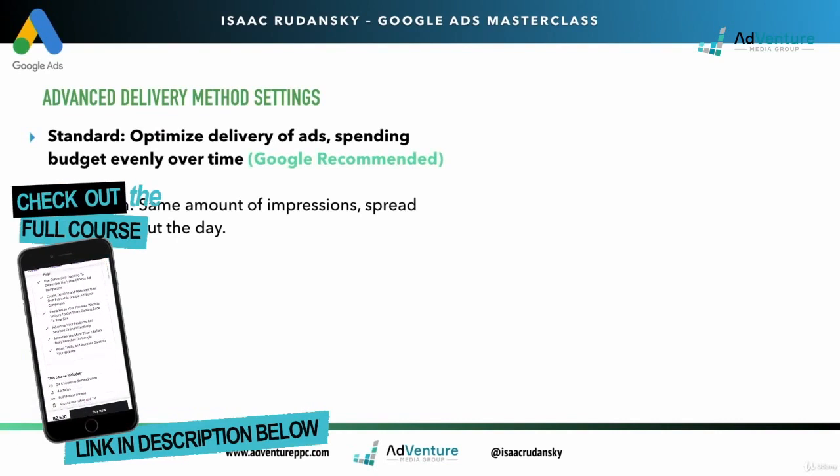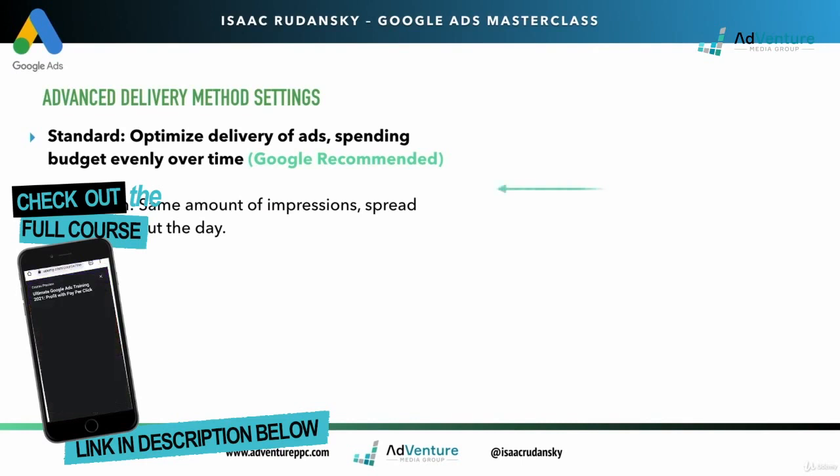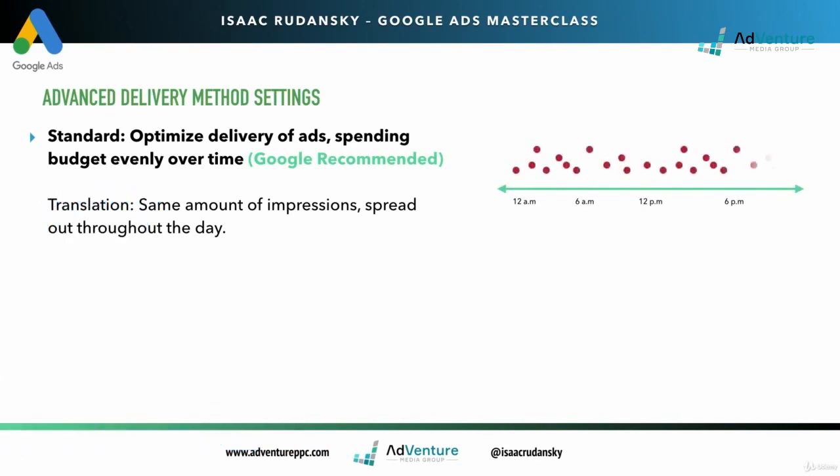That's what Google recommends. The translation of that is the same amount of impressions spread out throughout the day. Here's a visual representation of what that looks like. Let's say I'm bidding from 12 a.m. to 12 p.m., bidding 24 hours a day.